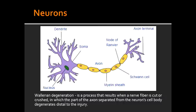What substance is used to stain the cell bodies and the dendrites? Cell bodies and dendrites can be stained with Nissl substance, because this contains rough endoplasmic reticulum. The axons, on the other hand, do not have rough endoplasmic reticulum, and therefore cannot be stained with Nissl substance.